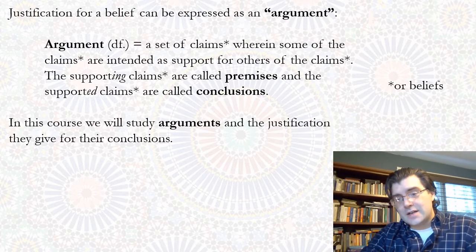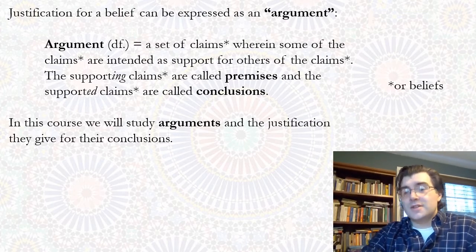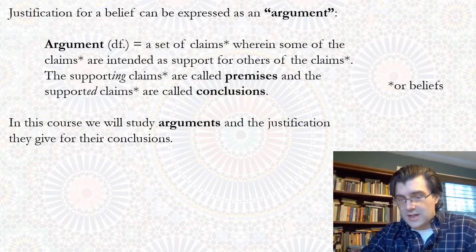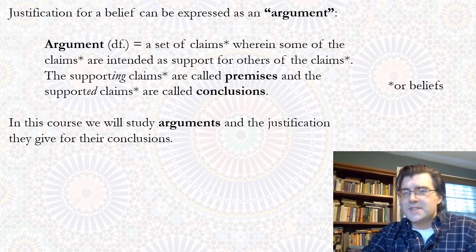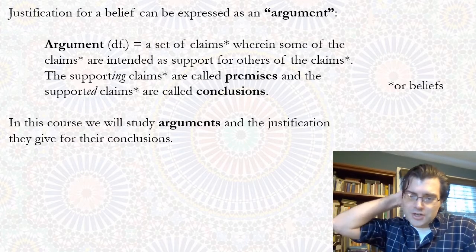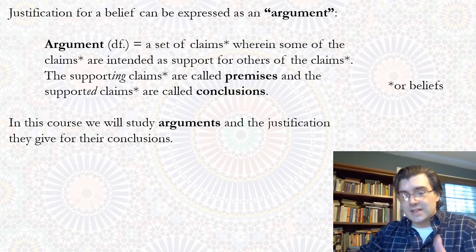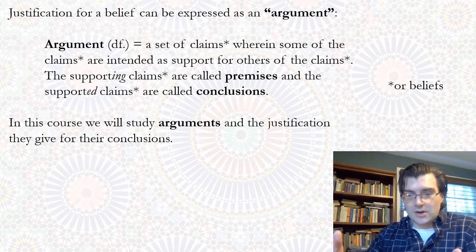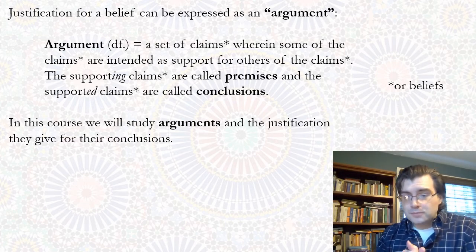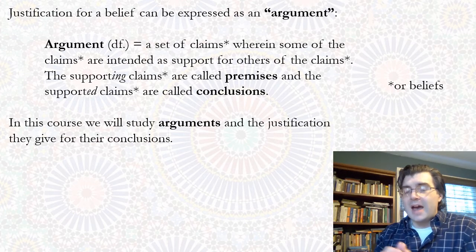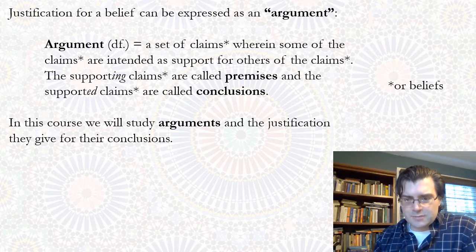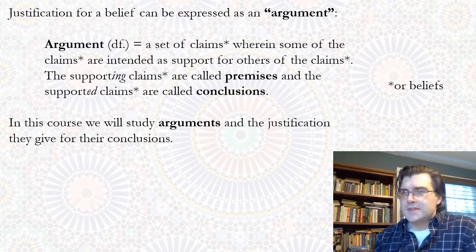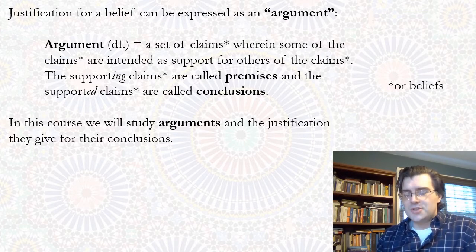Claims are declarative sentences that state some possible belief someone could have — like 'there are bears in Yellowstone Park' or 'there are no bears in Yellowstone Park.' Both express possible beliefs; they're both claims. Since a claim can express a possible belief, the relations between claims in stated arguments have a parallel in arguments expressed in someone's thinking, which we sometimes call inferences or the process of reasoning — but it's really the same relationship: justification between beliefs or claims.